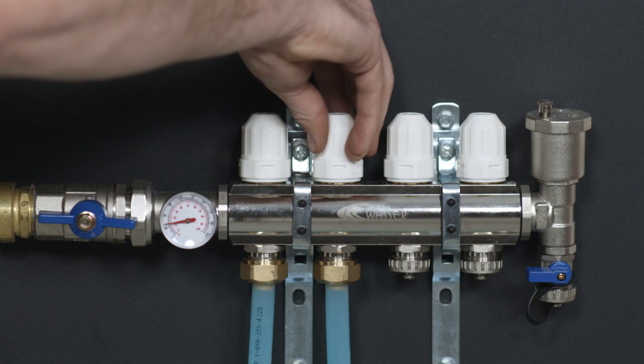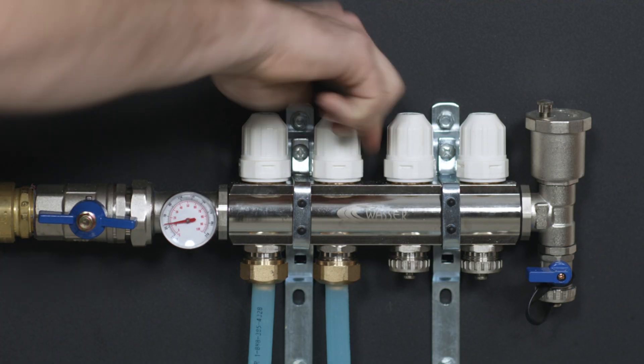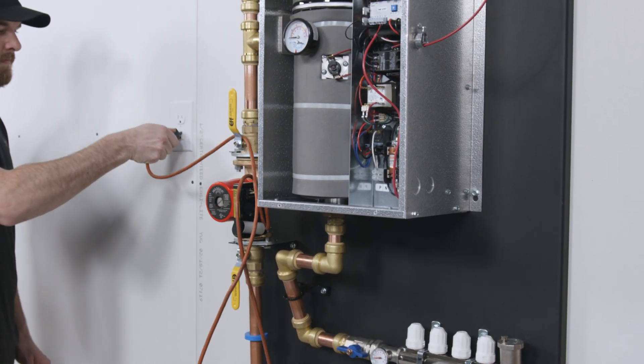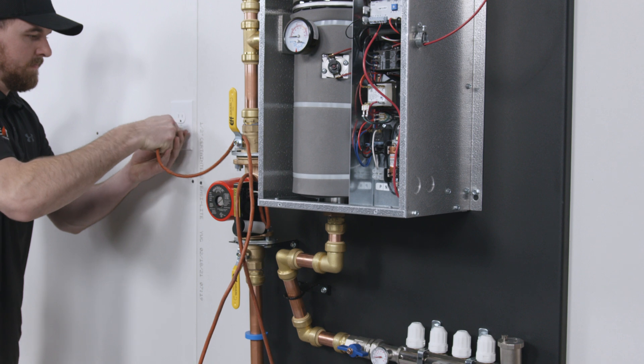Close all but one of the loops on the manifold. Using the wire on the pump your electrician installed for you, plug it in to start the pump.